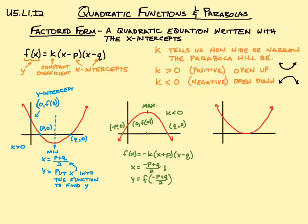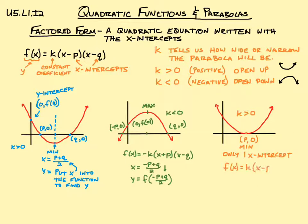One more case: a parabola with only one x-intercept. Here k is still greater than zero because it opens upwards, but the unique thing is we only have one x-intercept right on the x-axis. This point is both the x-intercept p,0 and the minimum point. So if we wrote this as a function, we'd have k times x minus p squared — because we only have one place where it crosses the x-axis. We could write x minus p times x minus p, but it's easier to just write x minus p squared.